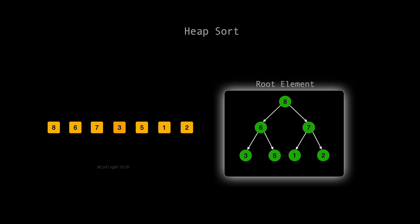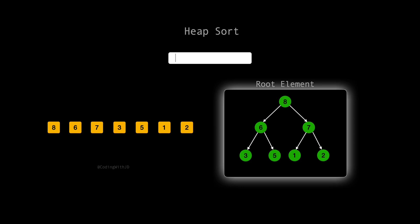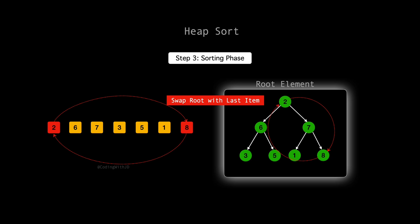Now that we've transformed our binary tree into a max heap, it's time to get into the heart of the heap sort mechanism. This is where we actually sort our array. Let's go through this process step by step. The first step in the sorting phase is to swap the root of the heap, which is the largest element, with the last element in the heap. This moves the largest number to the end of the array, where it belongs in the sorted order. With 8 now at the end of our array, it's locked in its final position.